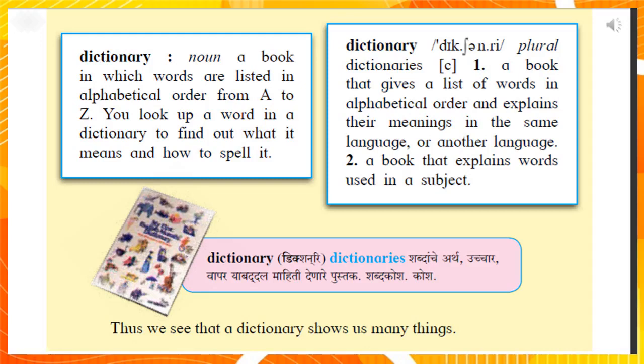Dictionary. Dictionaries. First, a book that gives a list of words in alphabetical order and explains their meaning in the same language or another language. Second, a book that explains words used in a subject.